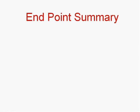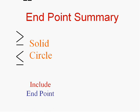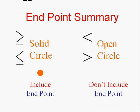Okay, so let's do a summary of what our end points are going to look like. If it's a greater than or equal to sign or a less than or equal to sign, it's going to be a solid circle at the end, because we want to include the end point because of the or equal. If it's just a less than sign or just a greater than sign, it's going to be an open circle because we don't want to include that because it's not or equal to.